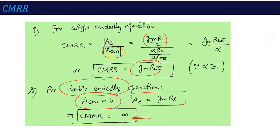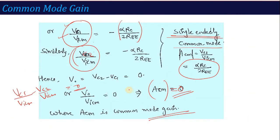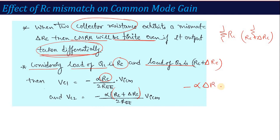If we take the differential output VC2 minus VC1 with mismatched collector resistances — load of Q1 is RC and load of Q2 is RC plus delta RC — then VC1 equals minus alpha RC divided by 2REE into VICM, and VC2 has RC replaced by RC plus delta RC. When we calculate VC2 minus VC1, all common terms cancel, and what remains is minus alpha times delta RC times VICM divided by 2REE.